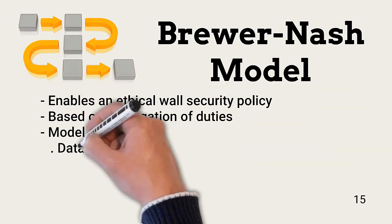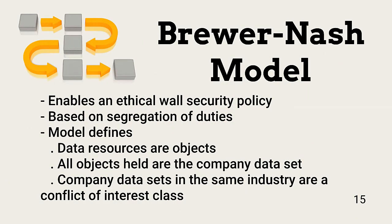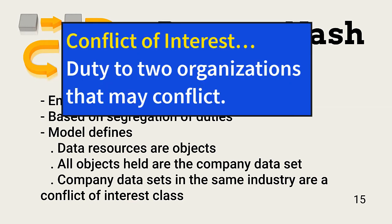The Brewer-Nash model, built upon information flow models, is concerned with the ethical handling of information. It intends to prevent users with access to objects from accessing other objects that may cause a conflict of interest. This model is commonly used in accounting and consulting firms. A conflict of interest arises when a person has a responsibility or obligation to one organization but might also have obligations to other organizations that conflict, or when an employee takes steps to aid one organization when she has fiduciary or other responsibilities to a competitor.